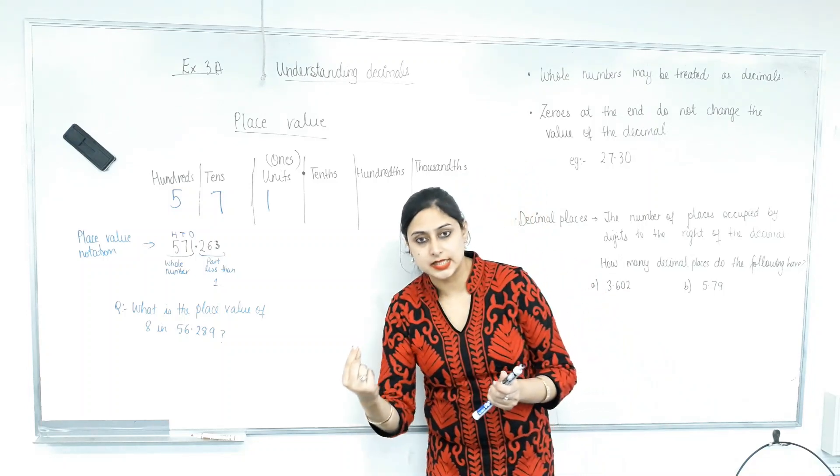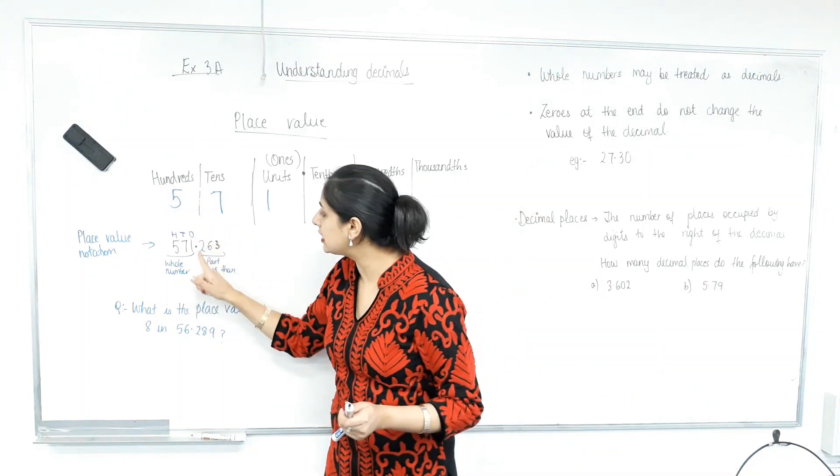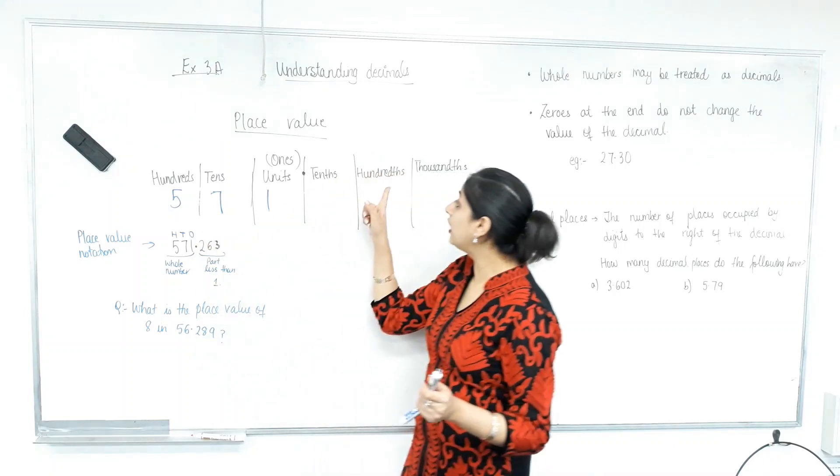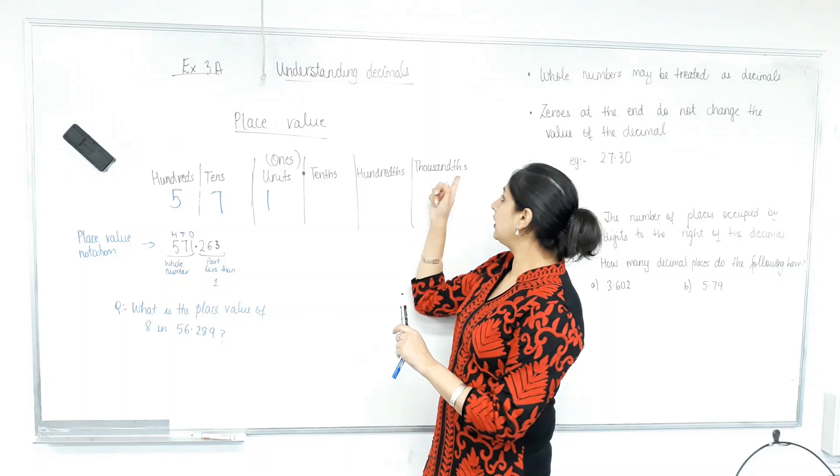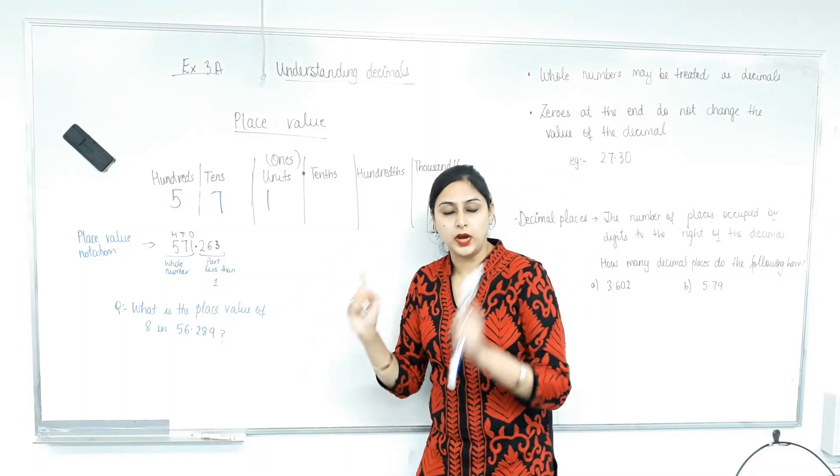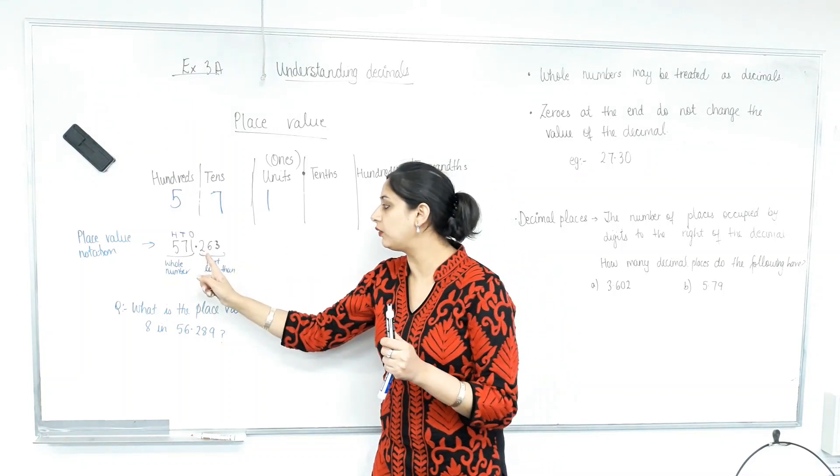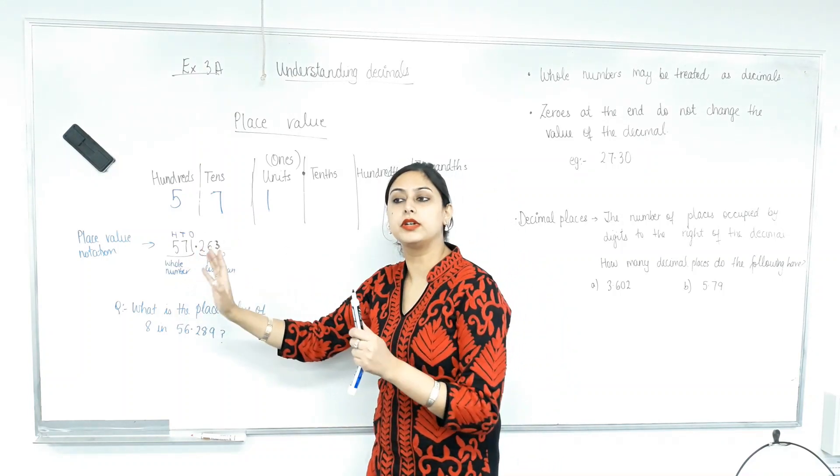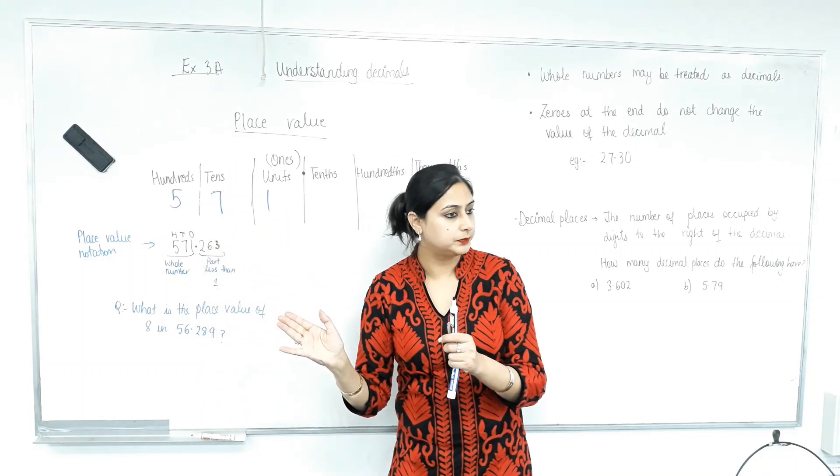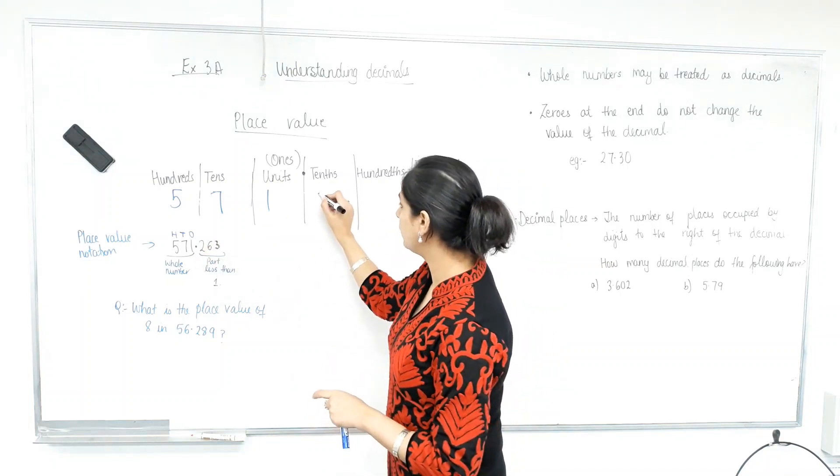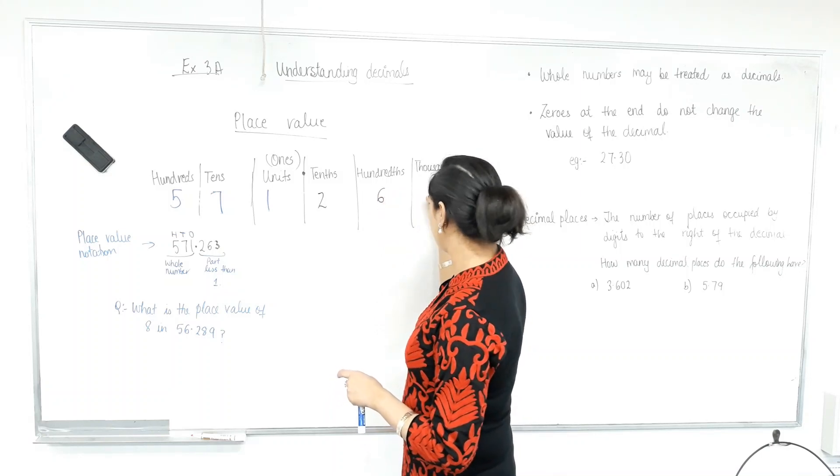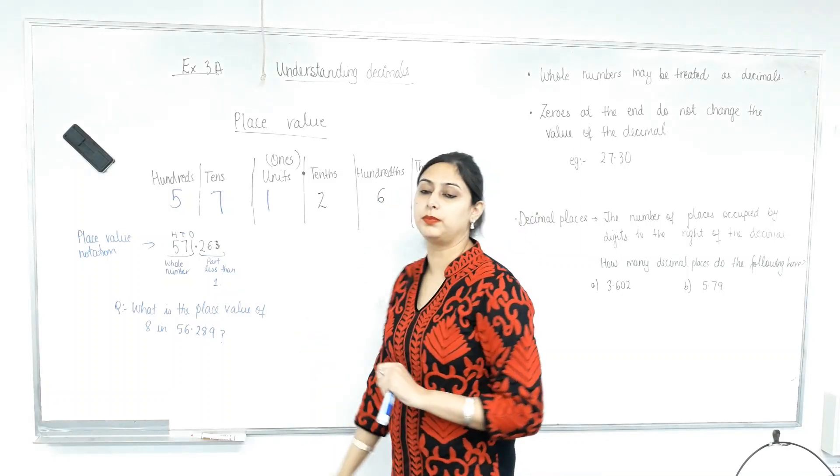Now, after the decimal, we go through tenths. So, basically, this is one tenth of a whole. Point two. Point two six would be one hundredth. Can you see it's TH? Yes. Then it is thousands. You'll never be asked to read it that way. But one thing you need to be mindful of is you can't read it 263. It's 571.263. Is that clear? Yes.